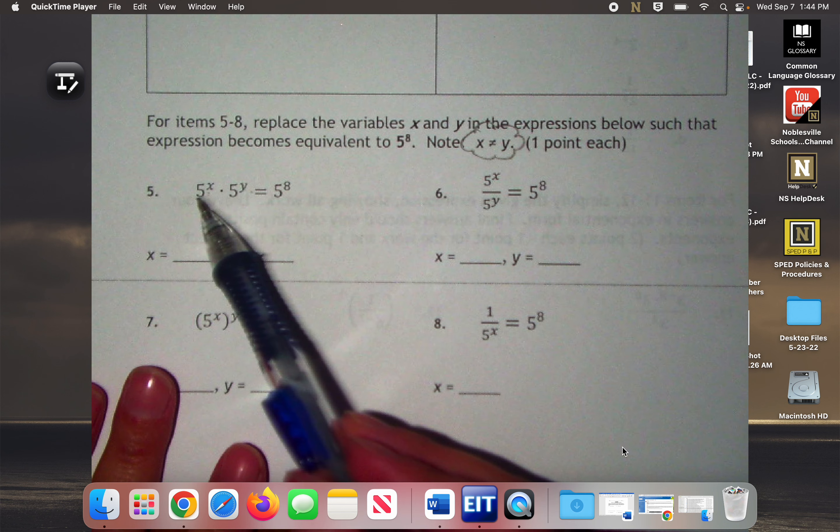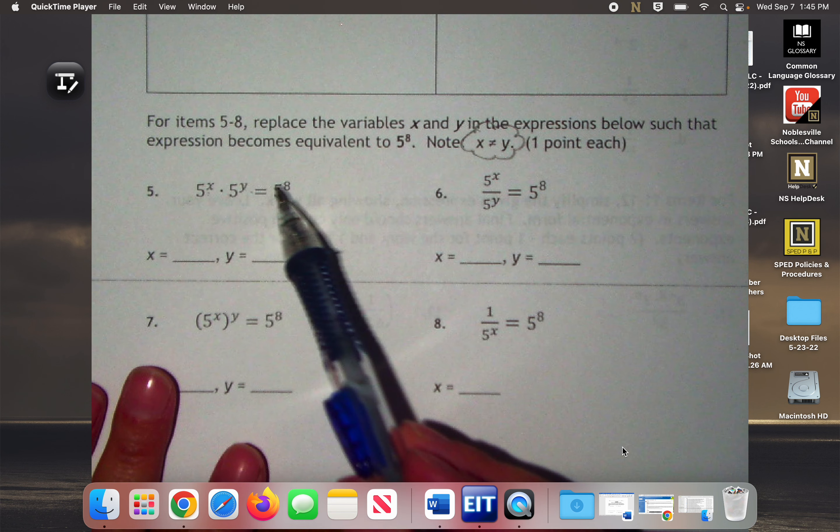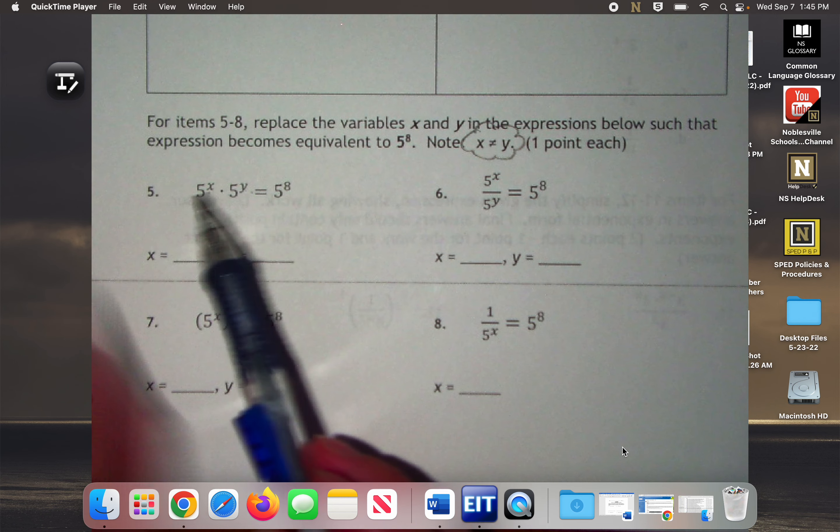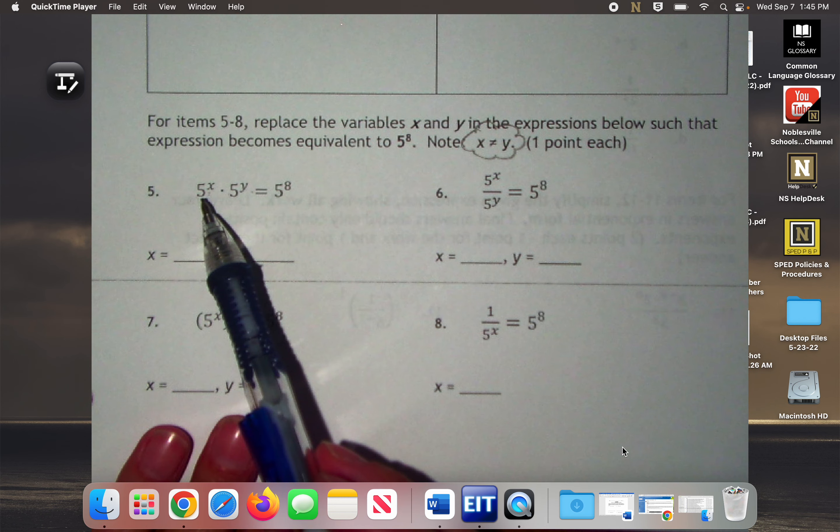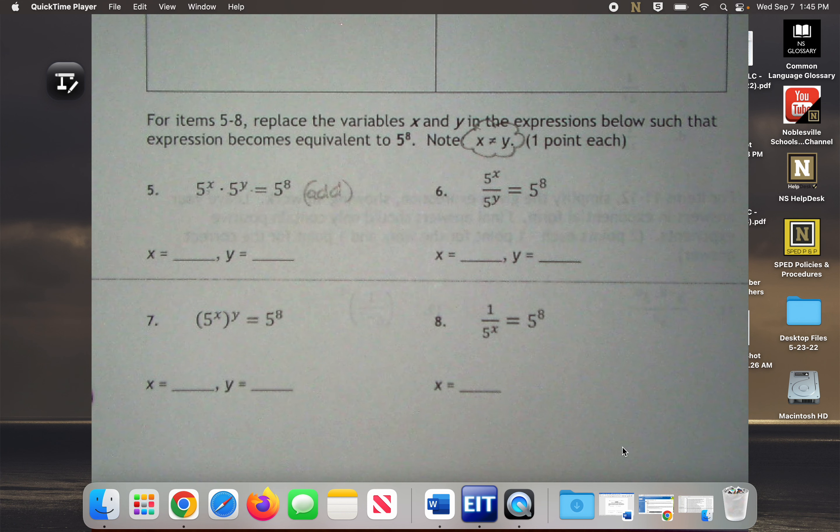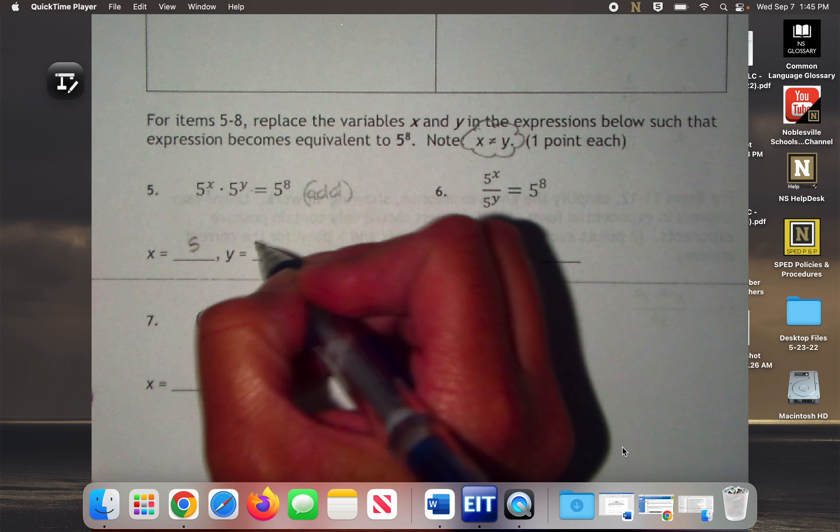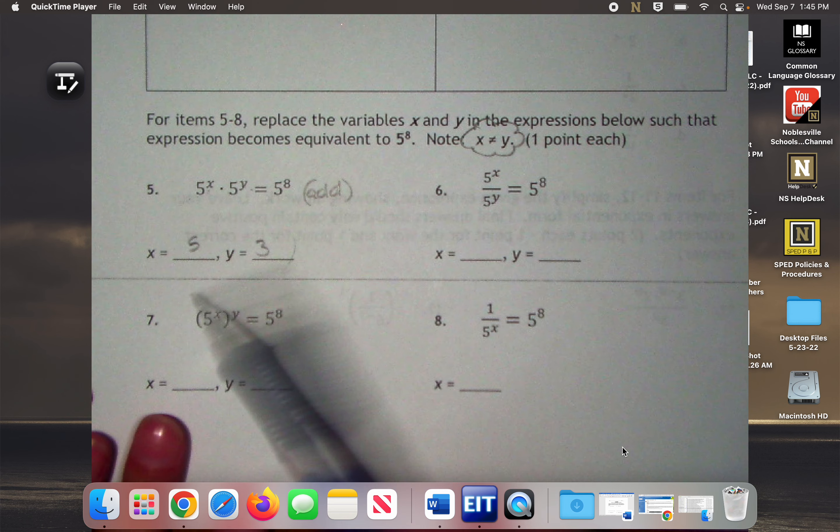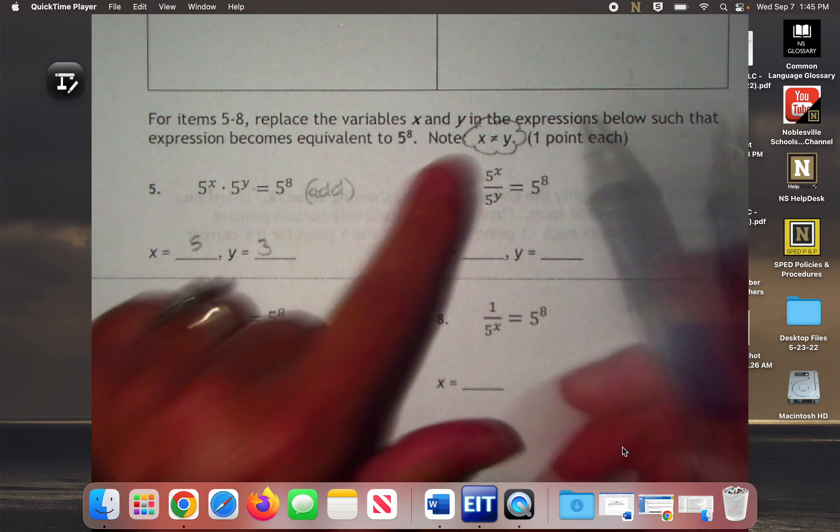So what am I going to do with this X and Y? What math am I going to do with that to get to the 8? This is multiplication, but what's the rule we use when we're doing the same base with the products? We're going to add them. So what two numbers can I add to make 8? Remember, they cannot be the same number, so do not say 4 and 4. 5 and 3, 6 and 2, 1 and 7. What about negative 2 and 10? Would that work?